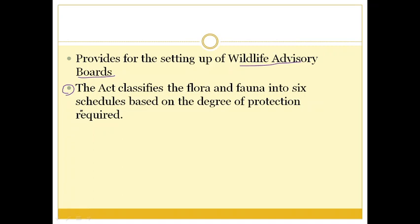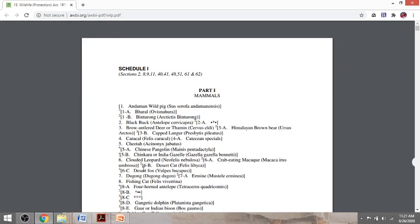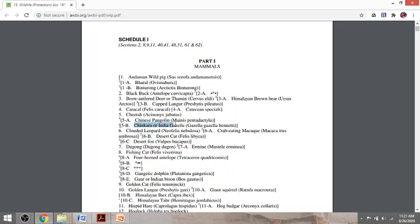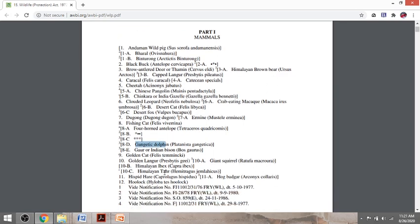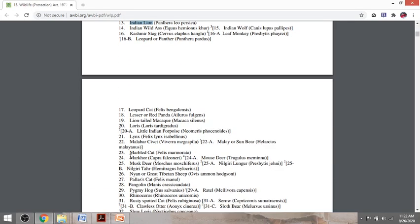Under each schedule, different categories of animals are included. Under Schedule 1 and Part Two of Schedule 2, absolute protection is provided. If anything is done against any of the animals under Schedule 1 or Part Two of Schedule 2, very high penalties are given. In Schedule 1 you can see animals such as the clouded leopard, the chinkara or Indian gazelle, desert fox, the Gangetic dolphin, golden cat, the Indian elephant, and the Indian lion — animals that need special protection.